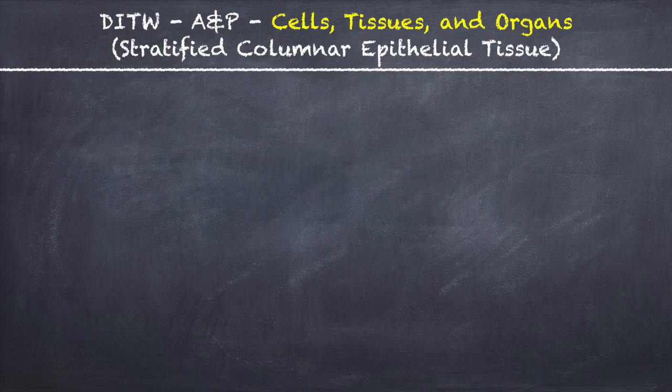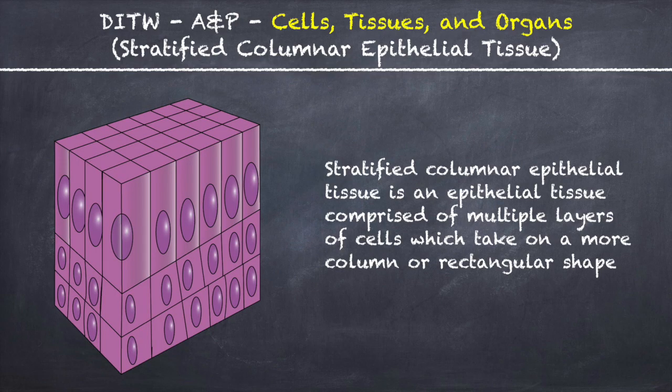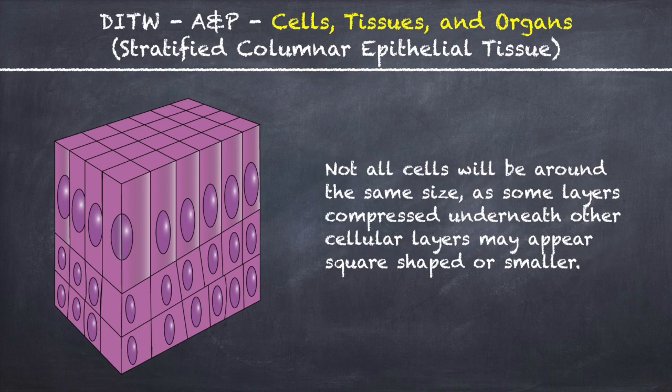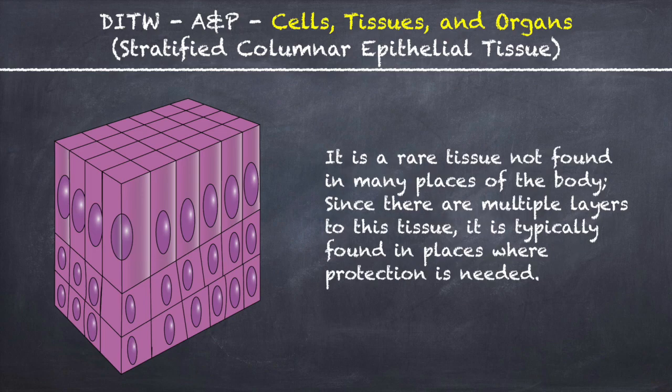This is DITW Anatomy & Physiology and you are watching the video on Stratified Columnar Epithelial Tissue. Stratified columnar epithelial tissue is an epithelial tissue comprised of multiple layers of cells which take on a more column or rectangular shape. Not all cells will be around the same size, as some layers compressed underneath other cellular layers may appear square-shaped or smaller. It is a rare tissue not found in many places of the body.